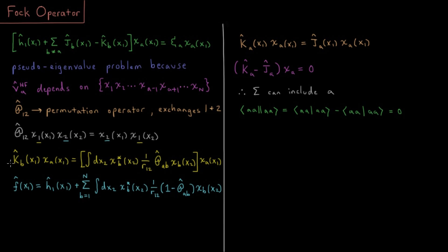If we define our exchange operator in this way, we note it has a similar form to the Coulomb operator from the previous video. The Coulomb operator was the complex conjugate of spin orbital B times spin orbital B, giving us the charge density of electron two in spin orbital B interacting with electron one through the one-over-R12 electrostatic interaction. The exchange operator is written in a very similar way, but serves to swap the two labels.